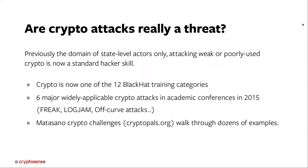Another question around crypto risk is: are crypto attacks really a threat? Is it not the case that an attacker will look for an easier way into your system than going around your cryptography? Maybe this is really just something state-level attackers do. It's definitely true that state-level attackers previously were where you found this expertise. But over time, the skill to either break weak cryptography or circumvent improperly used cryptography has become a mainstream hacking skill. At Black Hat, cryptography and how to break it is now one of 12 categories of training available alongside classical security topics — because it really is mainstream now.